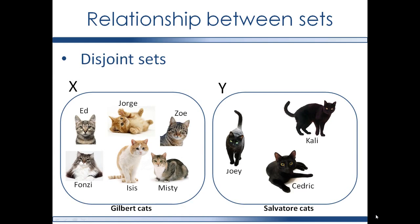Disjoint sets. Two sets are disjoint if they do not overlap, so that the intersection between the two sets is the empty set. Here there is no overlap between the cats in the Gilbert house and the cats in the Salvatore house, so the intersection between sets X and Y is the empty set — so set X and set Y are disjoint sets.